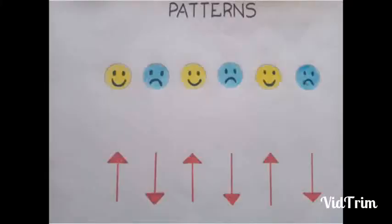First, let us see the patterns of objects and shapes. In the first pattern, you can see the smileys. They are yellow and blue in color. Look how it is arranged.